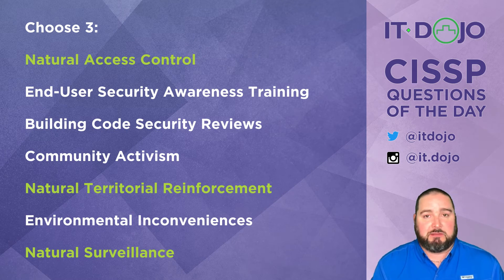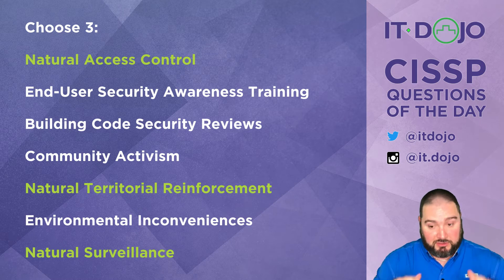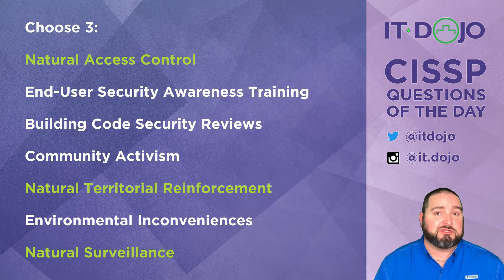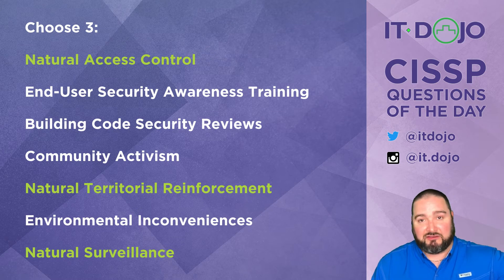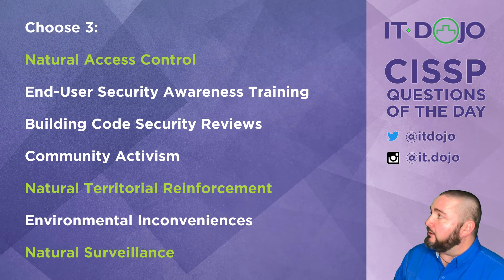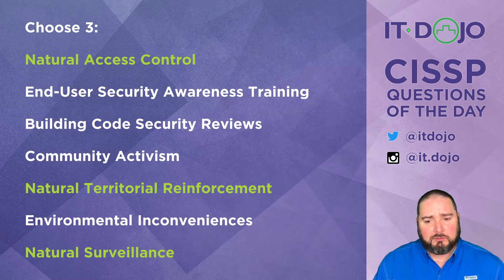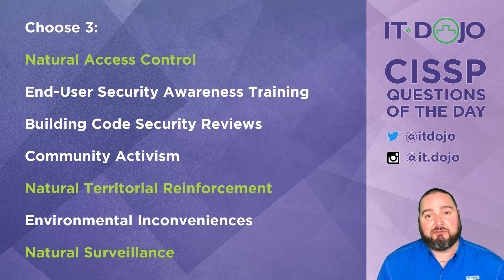There actually is a fourth component to CPTED, which is maintenance and activity support. Maintenance means you take care of the physical environment, which expresses a sense of ownership — things don't fall into disrepair. When things are well maintained, people can tell they are owned and cared for, which lends itself back to natural surveillance and territorial support. Activity support means encouraging activity in the environment, creating a space where people who are legitimately supposed to be there want to be in the public spaces.